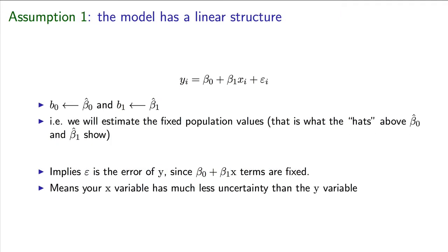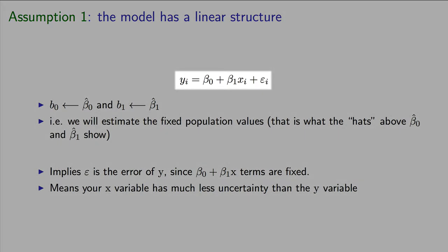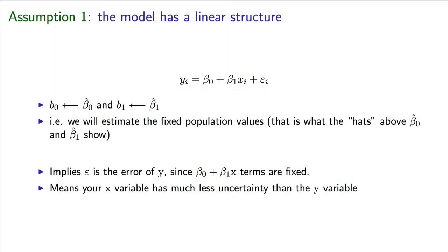The first assumption is a statement about the model structure. yi is equal to beta0 plus beta1 times xi plus an error, epsilon i. This assumption simply states that the model is linear with the form shown in the equation. The errors are the errors of y, because beta0 is fixed, beta1 is fixed, and x is fixed and known. The only term that has error, then, is y.